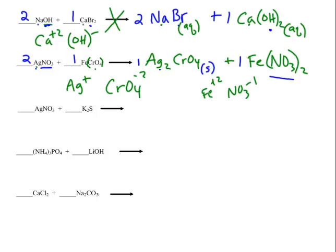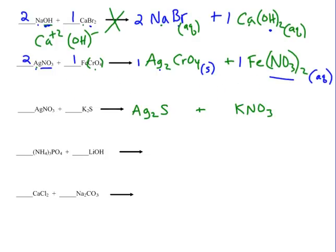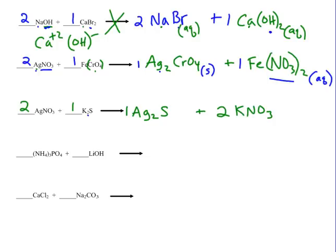Iron-2 nitrate: all nitrates are soluble with no exceptions, so Fe(NO3)2 is aqueous. Pause the video to figure out the product compounds for the third example. When silver (+1) combines with sulfide (−2), the formula is Ag2S. Potassium and nitrate coming together is KNO3. Notice that the subscript 2 next to potassium did not transfer over — this is why we need to balance the equation. Pause the video to balance the equation; the correctly balanced equation has coefficients 2, 1, 1, 2.